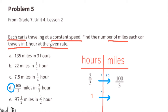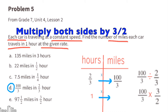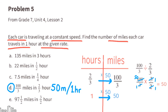The given rate for car D is 100/3 miles in 2/3 of an hour. We multiply 2/3 by its reciprocal 3/2 to get 1 hour, and multiply 100/3 by 3/2. Cross-canceling: 3 goes into 3 once, and 2 goes into 100 fifty times, leaving 50 over 1, which equals 50. So car D travels 50 miles in 1 hour.